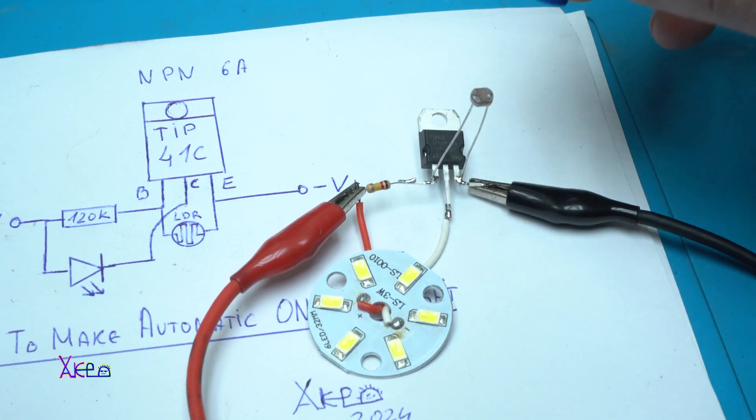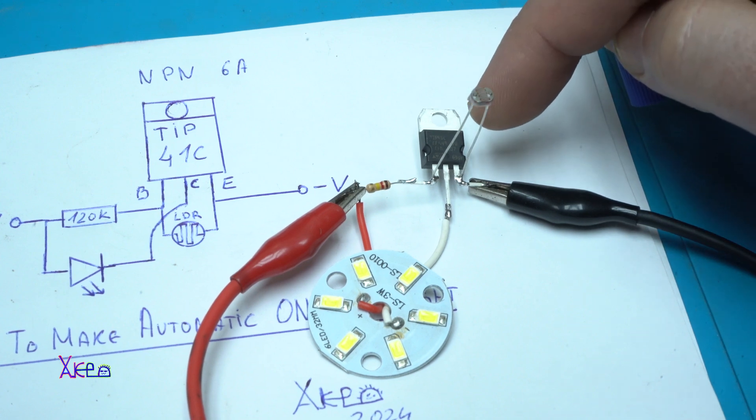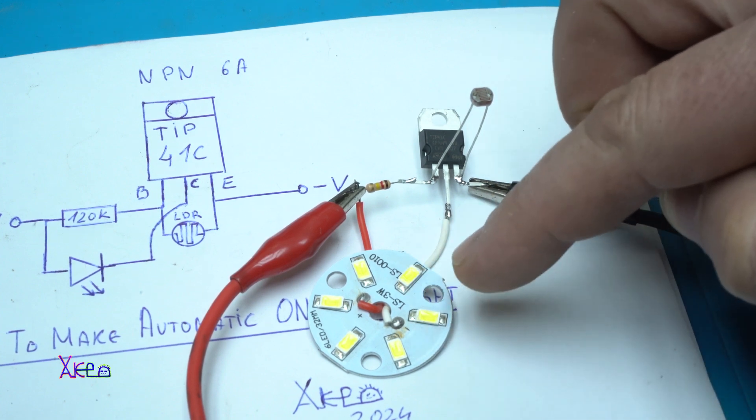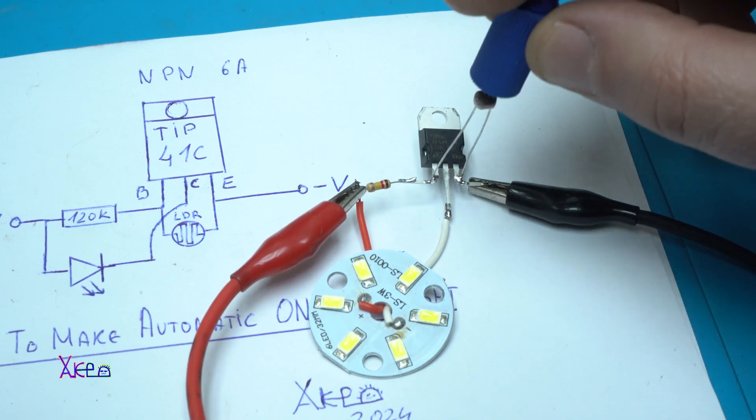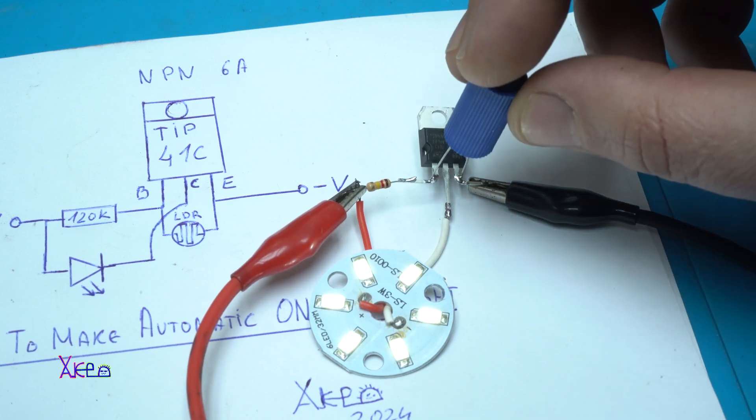You can use this circuit with this transistor that can handle maximum up to 6 amperes. You can put some high power LEDs and use the transistor to its maximum. It's very simple, the simplest automatic on-off light.